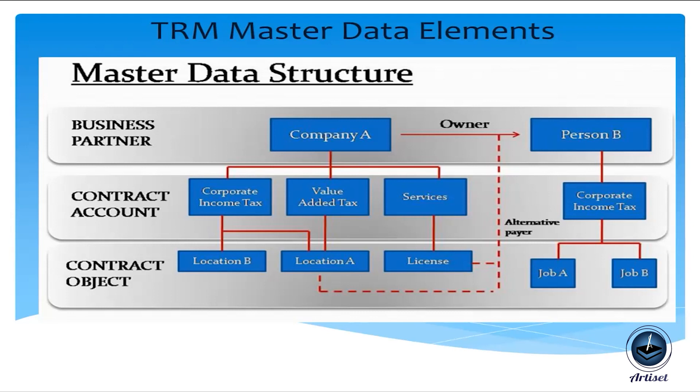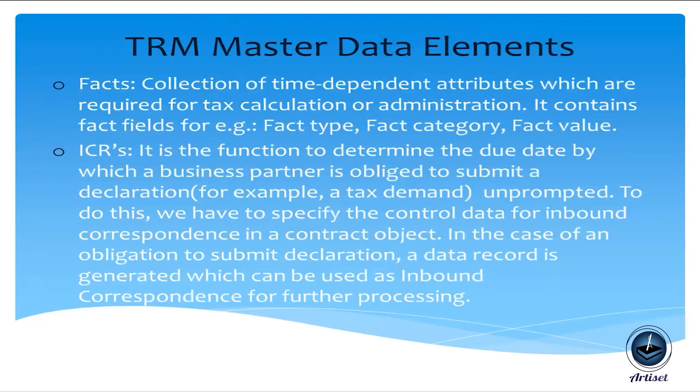These three master data elements — BP, CA, and CO — are created either through the portal or directly in SAP. In SAP, the t-code for Business Partner is BP, for Contract Account it is FP01 or SCAA1, and Contract Account and Contract Object are linked automatically when the BP is entered. The t-code for Contract Object is PSOB (piece of work).